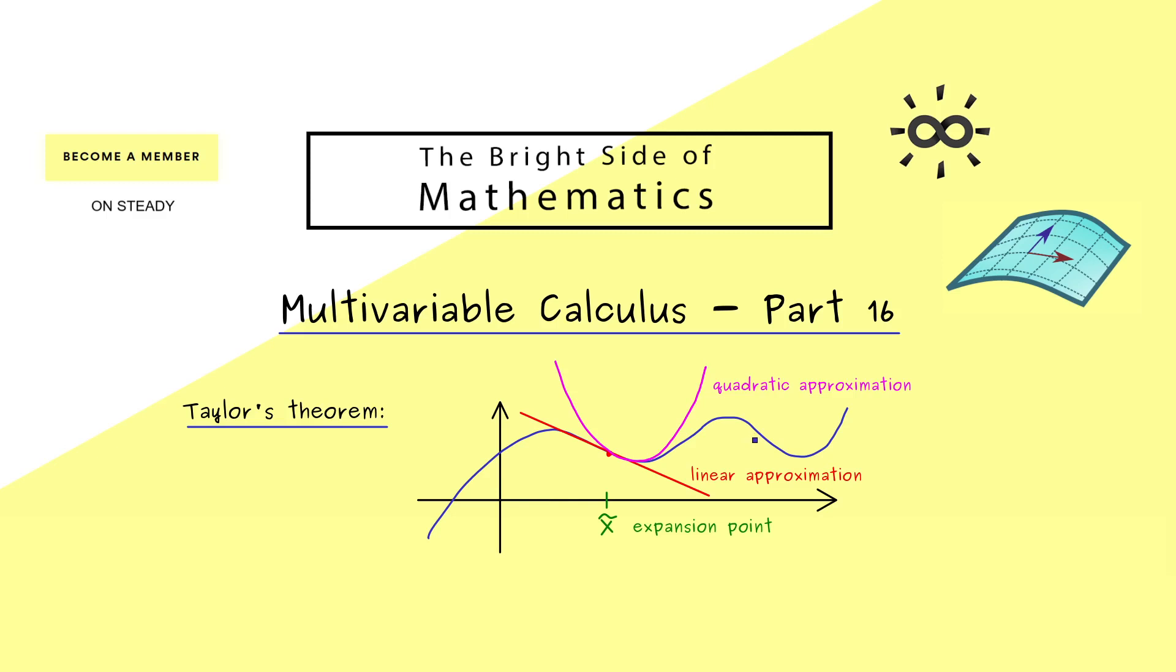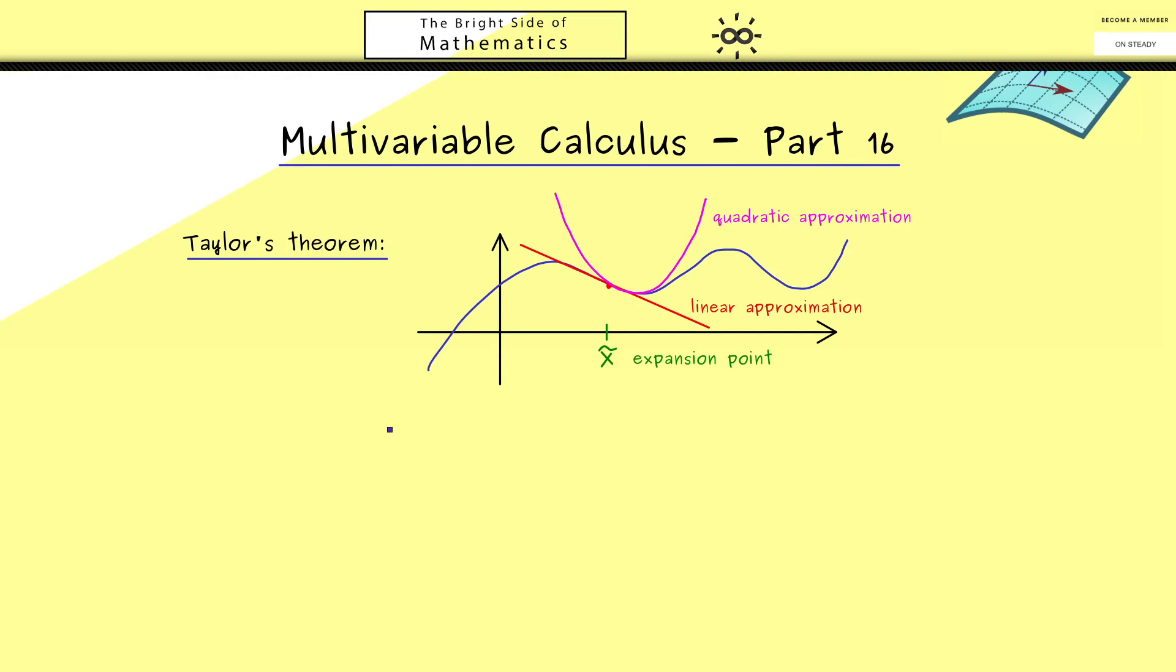Now, in fact it's not complicated at all to translate this into multivariable calculus. It should be more or less the same thing, just with the difference that this one-dimensional x-axis here is now an n-dimensional domain. So now what we consider is a function f with domain R^n and values in R.